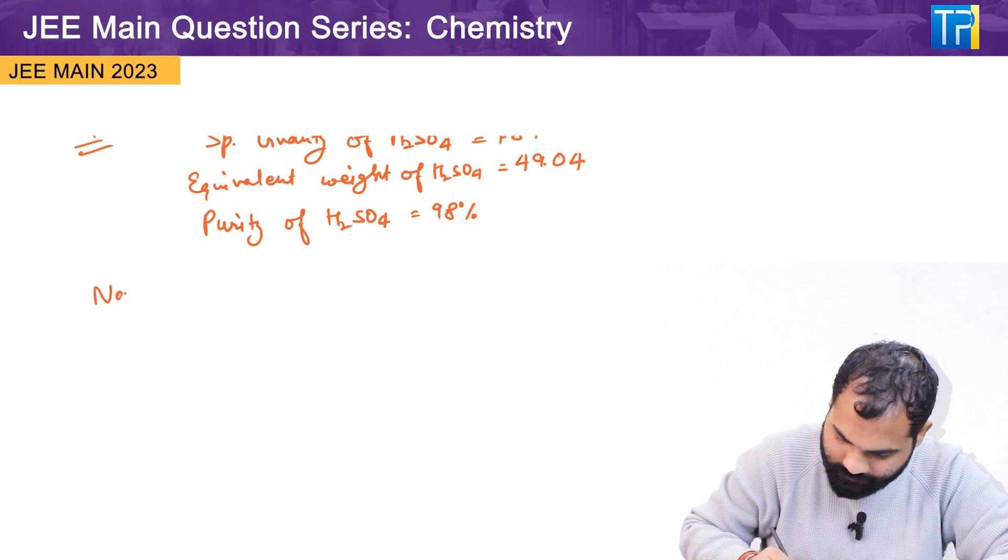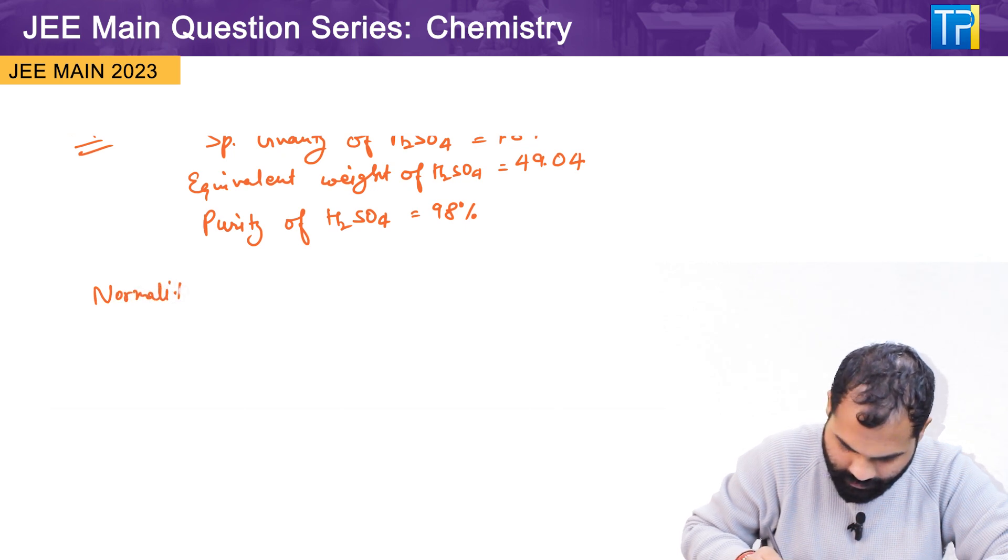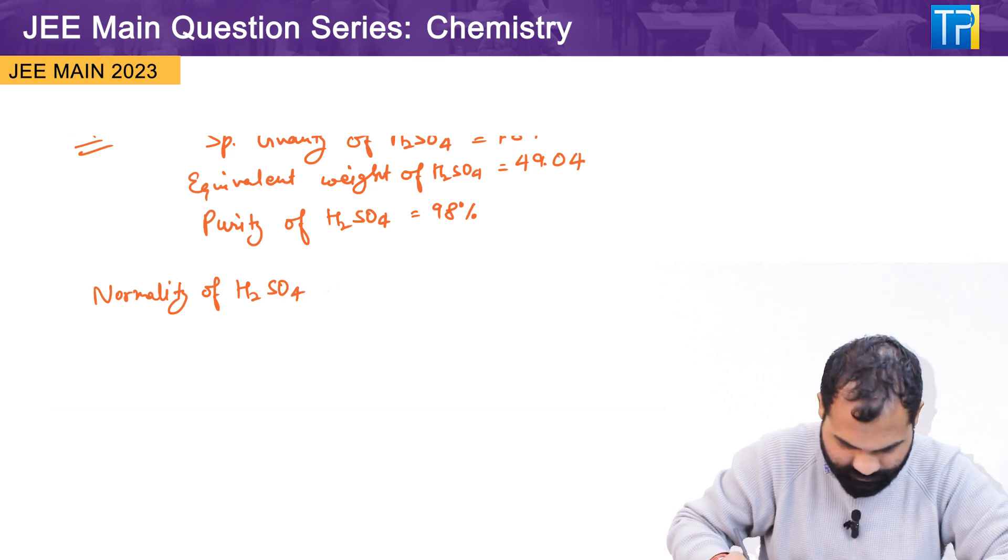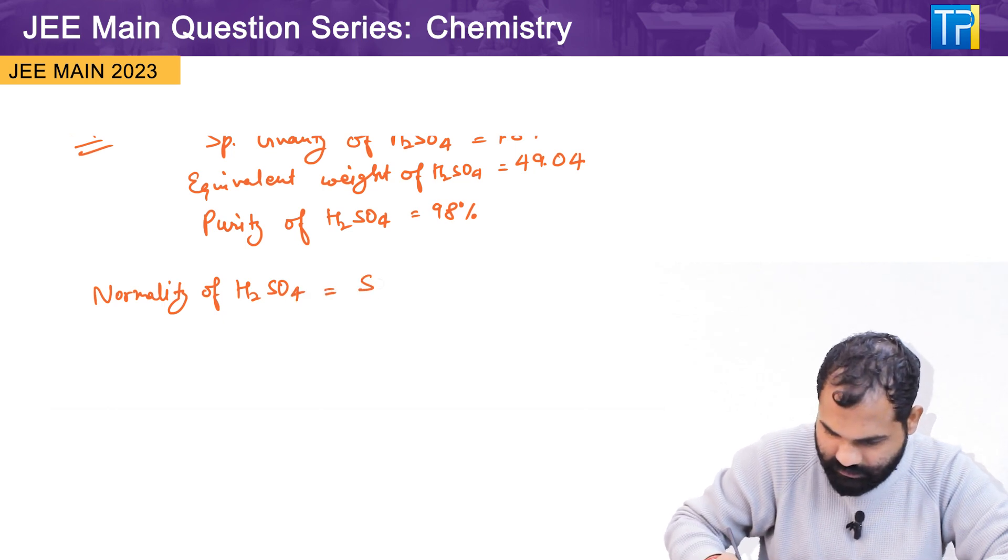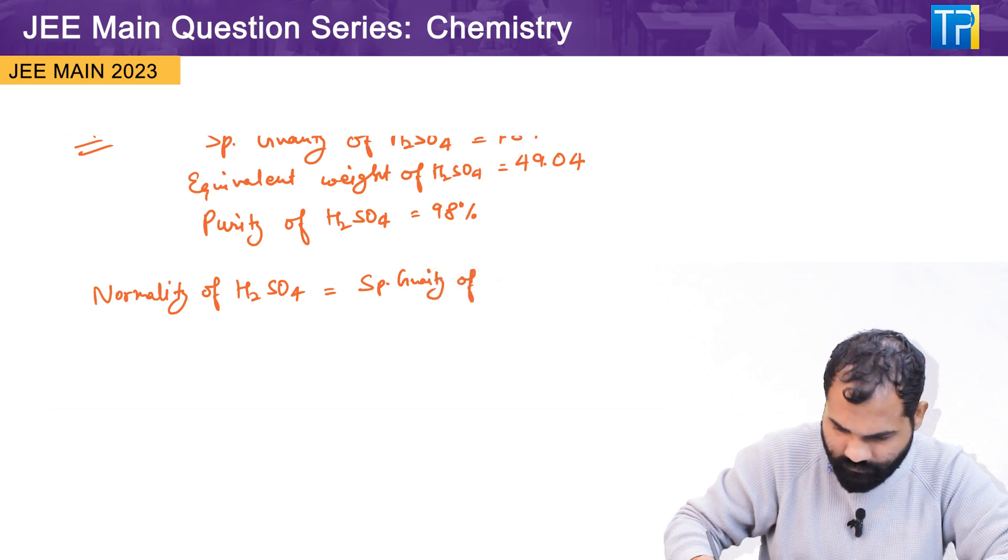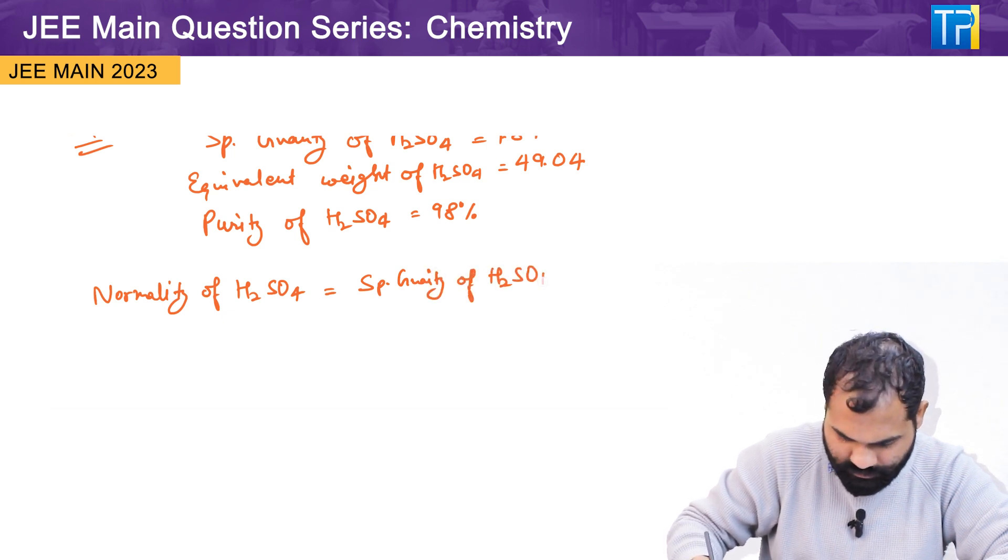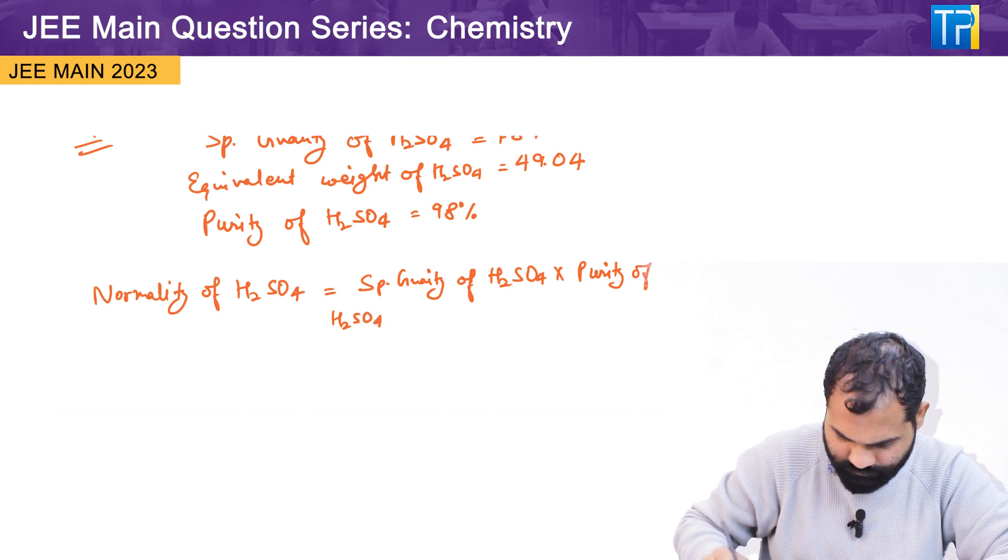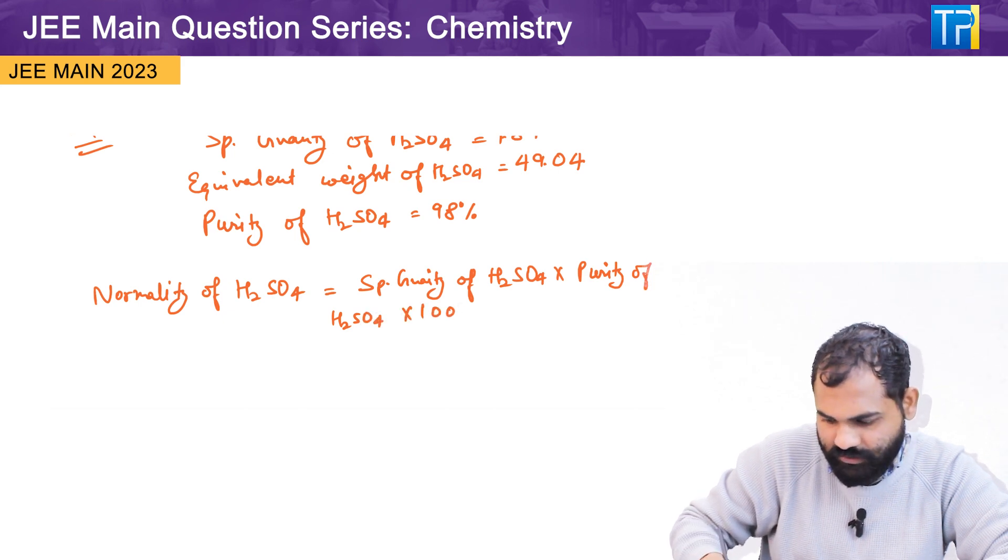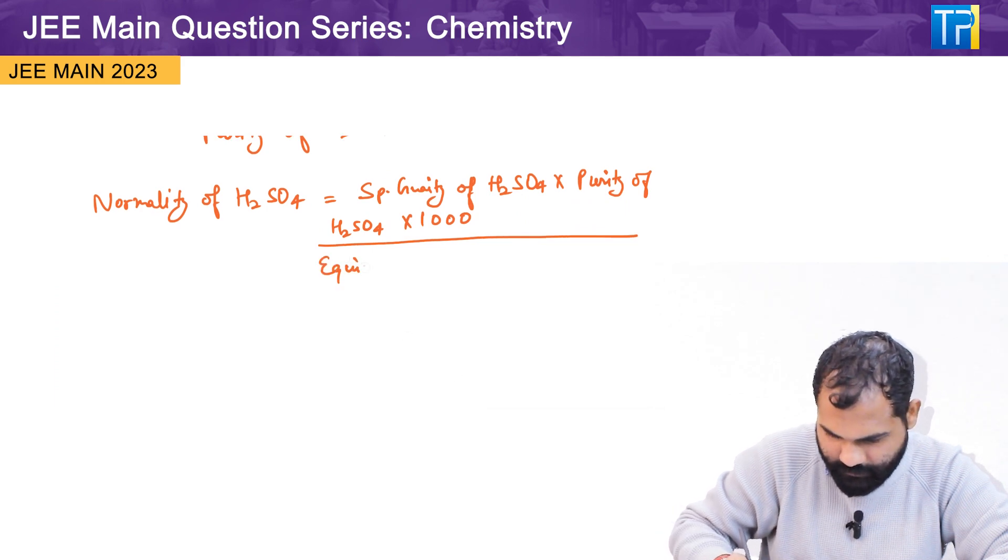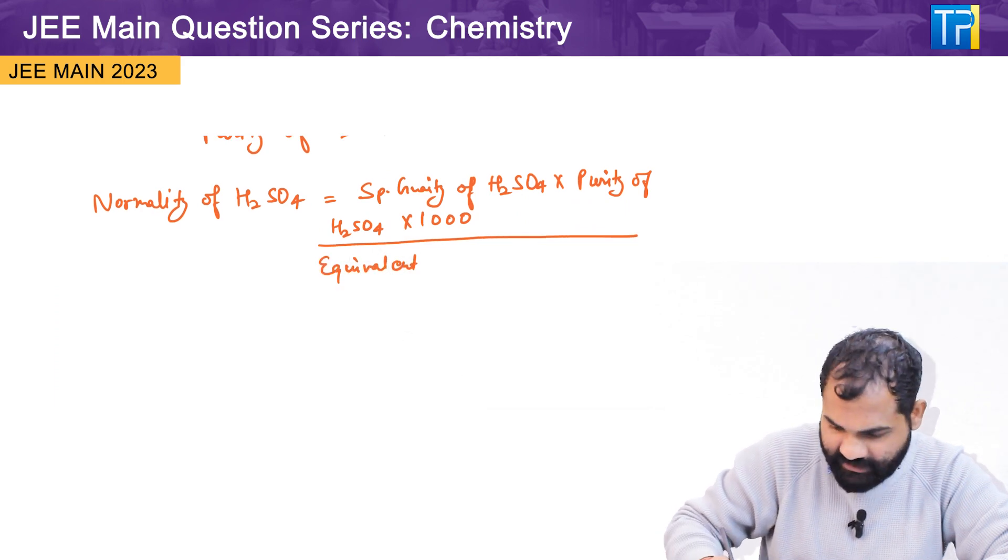And the formula of normality of a chemical compound, let's say we have H2SO4 in this situation: the specific gravity of H2SO4 multiplied with purity of H2SO4 into 1000, and it is divided by the equivalent weight of the chemical compound.